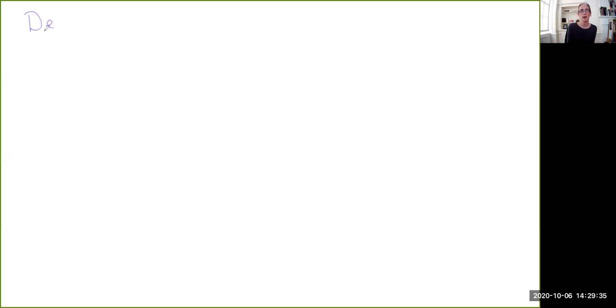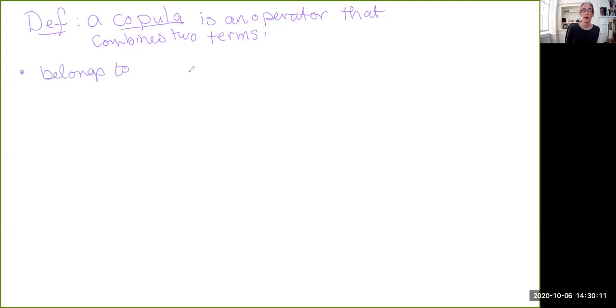So here we have a definition of the notion of copula. So a copula is an operator that combines two categorematic terms. Now it's not just any operator, it's actually going to be one of the following. So we have the copula belongs to every, belongs to none, belongs to some, and doesn't belong to some.